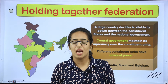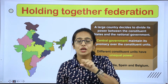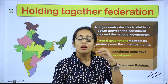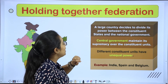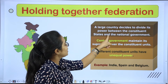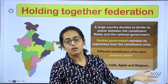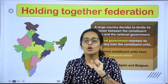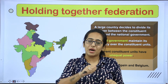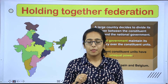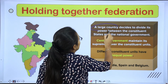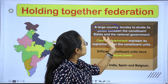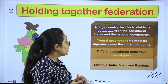Now let's move on to Holding Together Federation. In Holding Together, the national government holds the leading role. The national government ultimately delegates power to the state government and local government. A large country decides to divide its power between the constituent units — states and national government.